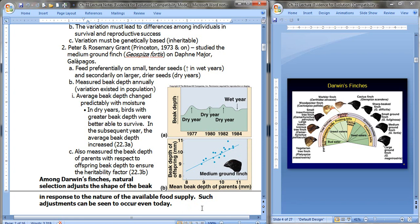So among Darwin's finches, natural selection adjusts the shape of the beak in response to the nature and availability of food supply. Such adjustments can be seen to occur even today.